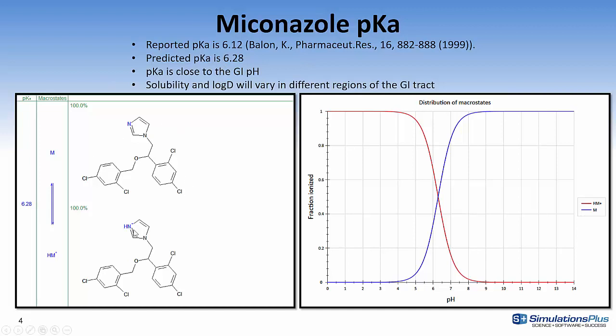These two images are of miconazole. It's a compound containing four chlorine atoms and two phenyl rings so it's a fairly hydrophobic compound. This imidazole ring can be protonated and at pH below 6.28 most of the compound will be in this form, above that will be in the neutral form. On the right is distribution of the microstates so the y-axis is the fraction ionized and the x-axis is the pH. This red line is for the protonated compound and the blue line is for the neutral form.